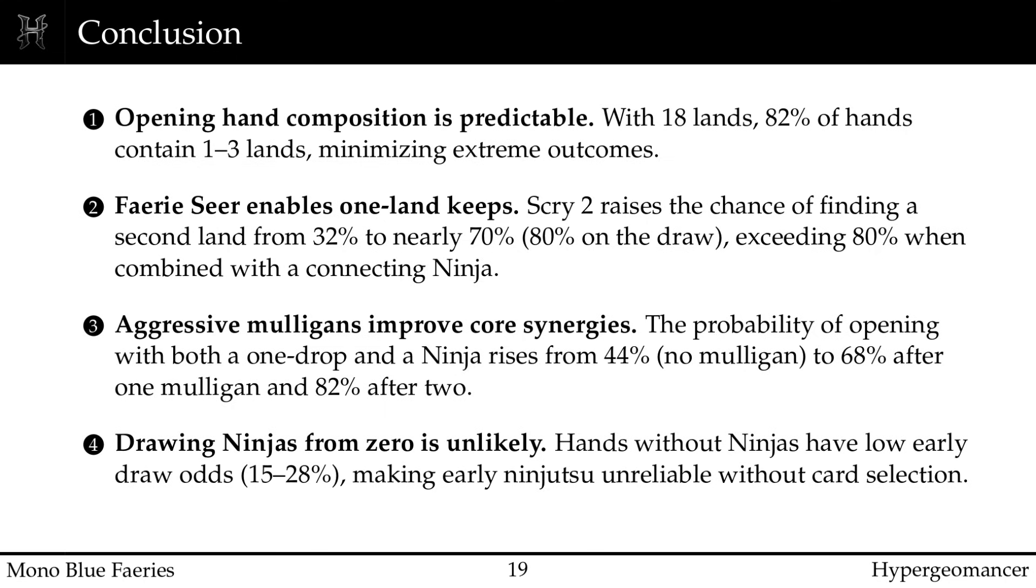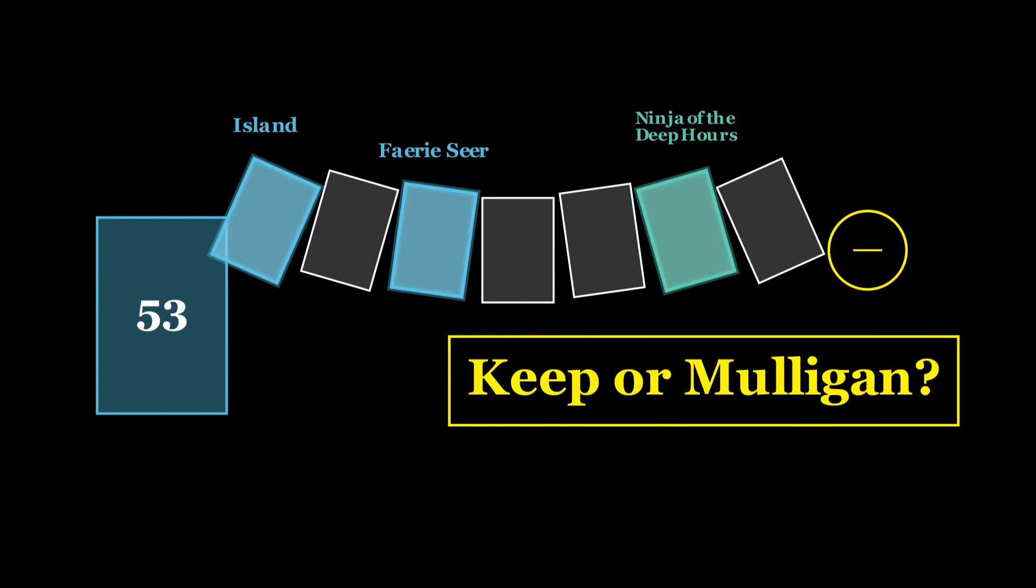The key insight is this. Mono Blue Faeries is a deck of precision. It executes a specific game plan and it rewards pilots who understand the mathematics underlying that plan. Your mulligan decisions aren't guesses, they are calculations. Your keep or mulligan choices aren't intuition, they are probabilities. So next time you are staring at an opening 7, wondering if you should trust it, remember, you have the numbers, you know the odds, and you've done the math. And in Magic, just like in mathematics, knowledge is power.